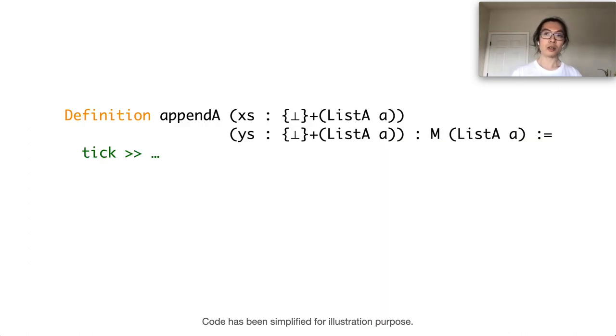Now, let's look at the append function again and see these operations in action. First, we insert a tick operation in the head of every function body so that we can count the number of function calls as a measure of computation cost. Our next step is to make the function call recursive.